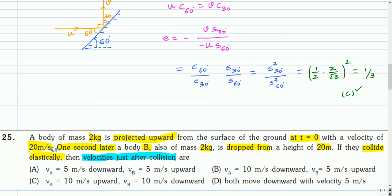This is the next question. A body A of mass 2 kg is projected upwards from the surface of the ground at t = 0 with a velocity of 20 meters per second. One second later, a body B also of mass 2 kg is dropped from a height of 20 meters. If they collide elastically, find the velocity just after the collision.